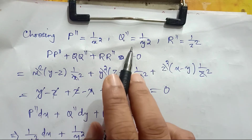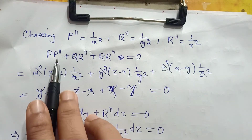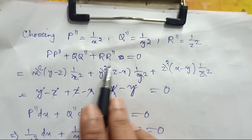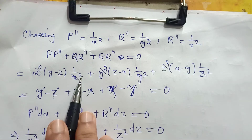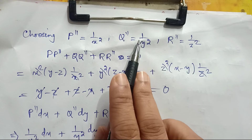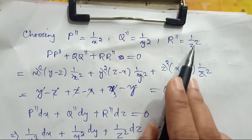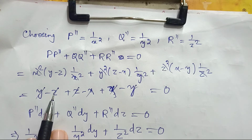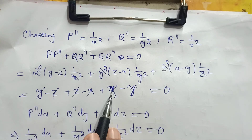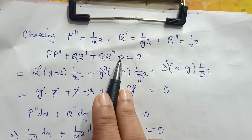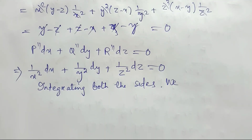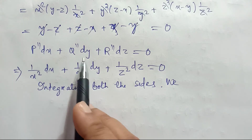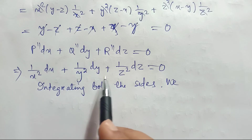We choose p'', q'', r'' such that the result equals 0. Checking: x²(y-z)·(1/x²) + y²(z-x)·(1/y²) + z²(x-y)·(1/z²) = (y-z) + (z-x) + (x-y) = 0. Since this is 0, p''dx + q''dy + r''dz = 0, i.e., dx/x² + dy/y² + dz/z² = 0.